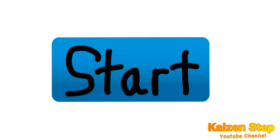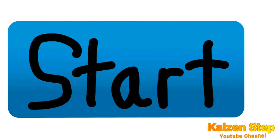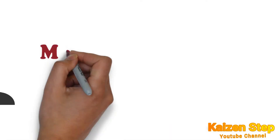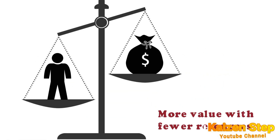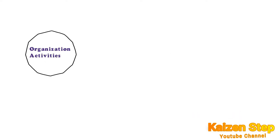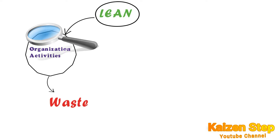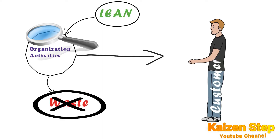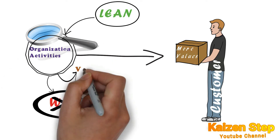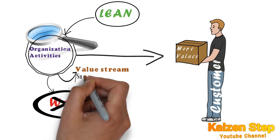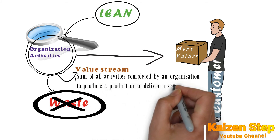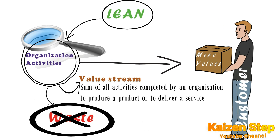Let us go forward and know what is lean. Simply, lean means creating more value for customers with fewer resources. Lean offers a structured methodology that maximizes value for the customer through the elimination of waste from any organization's activities. Lean examines the entire value stream, which is described as the sum of all activities completed by an organization to produce a product or to deliver a service.